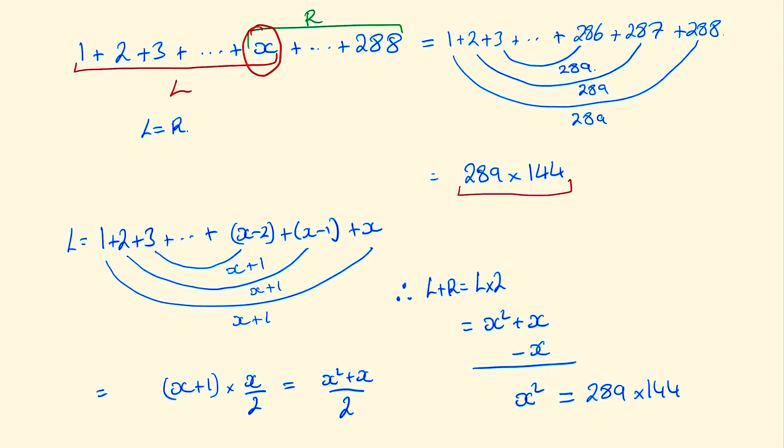And taking the square root of both of them we end up with x equaling 17 times 12 which is 204. So what is Jane's box number? It's 204.